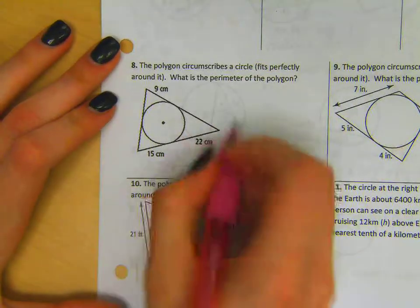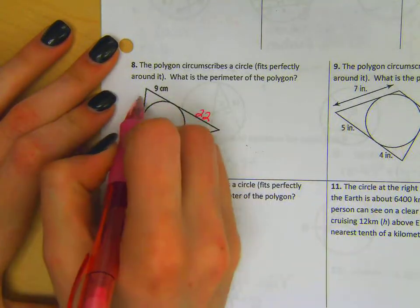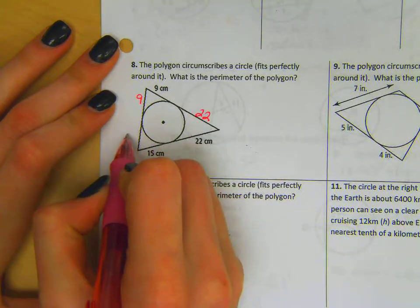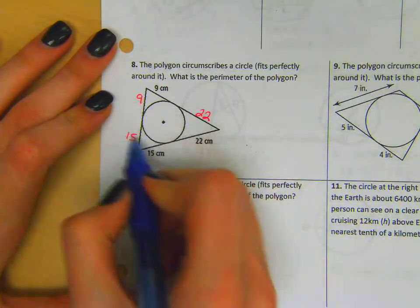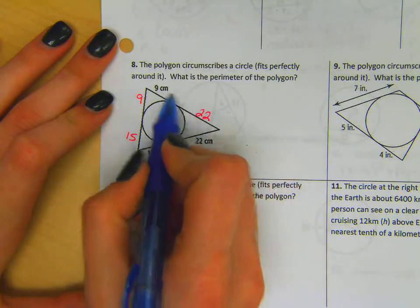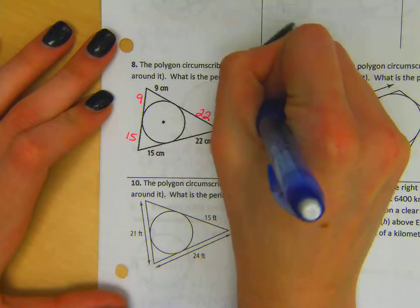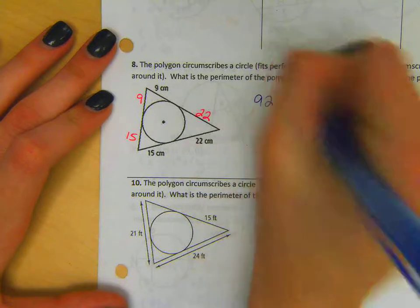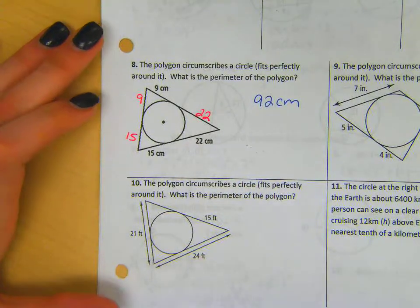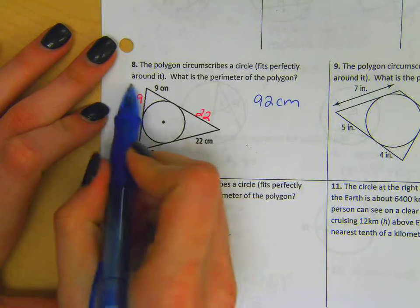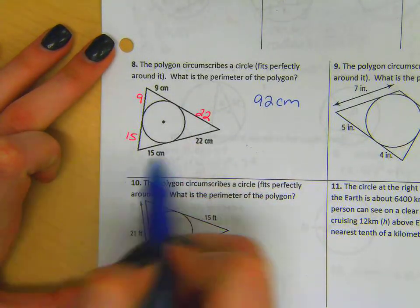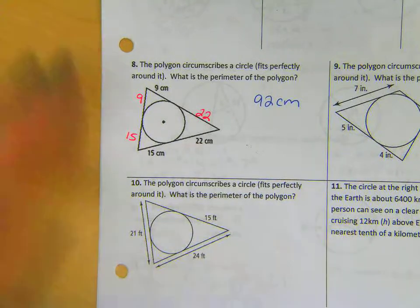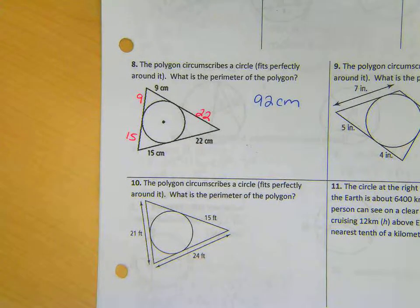So if this is 22, so is this. If this is 9, so is this. If this is 15, so is this. What I have now, I've filled in all of my missing pieces. I can add all of these values up and get 92 centimeters as my perimeter. Another thing I could have done is I could have added these two pieces, these two pieces, and these two pieces to find the three sides of the triangle and added those three values and I would have still gotten 92.